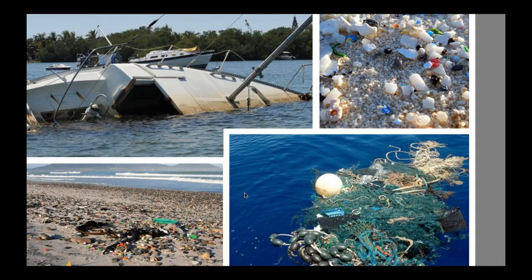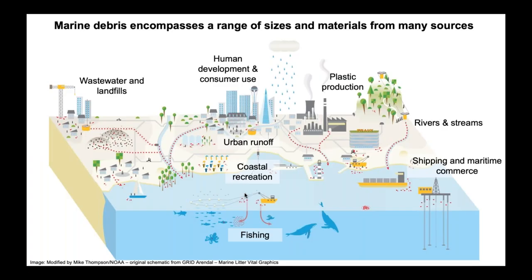Marine debris is a broad topic. The definition covers a wide range of materials and sizes, ranging from derelict vessels all the way to microplastics. Around 80 percent of marine debris is thought to be plastic, so today we're going to especially focus on ocean plastic pollution and secondarily on derelict fishing gear. About 80 percent of marine debris arises from land-based sources, while about 20 percent arises from maritime sources like fishing and shipping — though this ratio varies widely depending on geographic location.